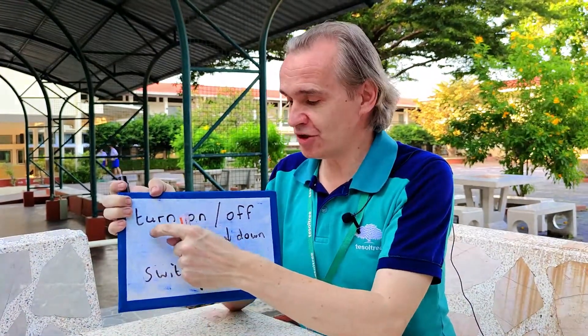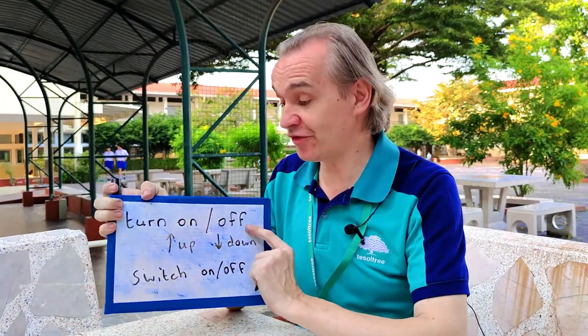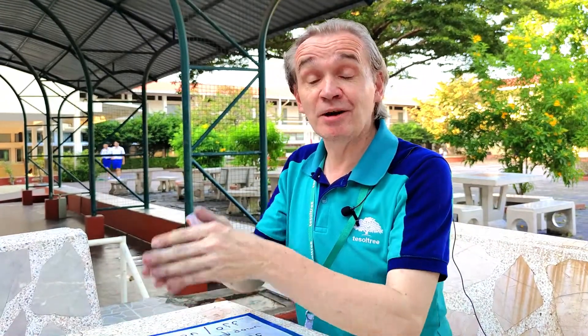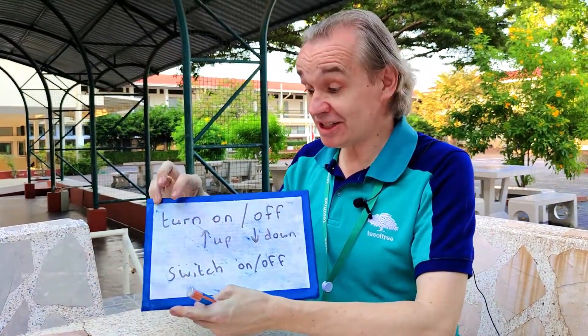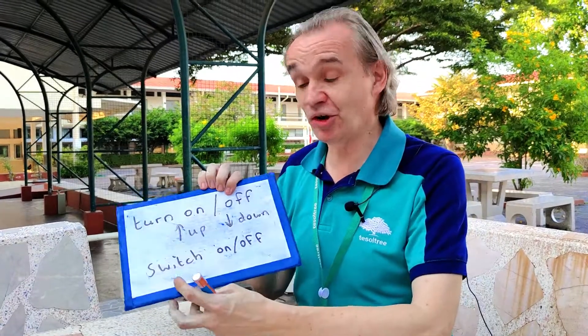So, the way to remember is: if it's something about power, electricity, or water, we would use turn on and turn off. If it's an object, like a book, or a door, or a chair, we can use open and close. That's how we use it differently. In English: turn on, turn off, or switch on, or switch off. So, when you finish watching this video, you can turn the video off.